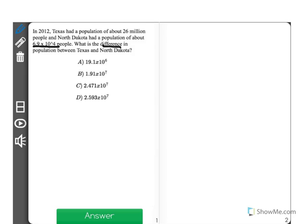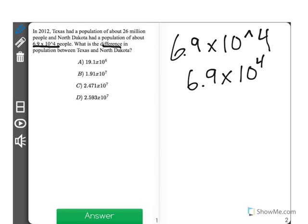Now, something to note. When it says 6.9 times 10, and we have that little caret sign 4, that is the same exact thing as saying 10 to the fourth. It's just another way to write it.